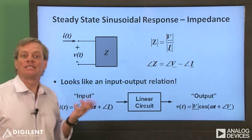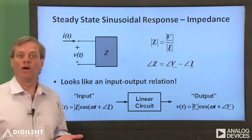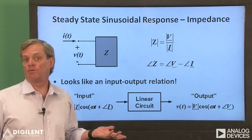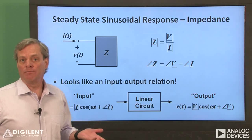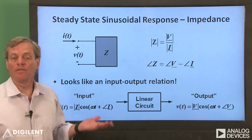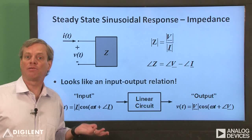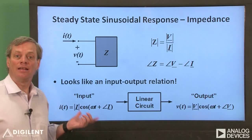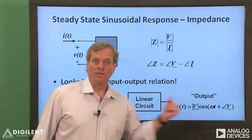This is essentially what we were doing when we were measuring the gain and phase between arbitrary signals in our first Chapter 10 video. If we consider the current to be our input and the voltage to be our output, the process of measuring impedance is the same as determining the gain and phase difference between an input and an output.